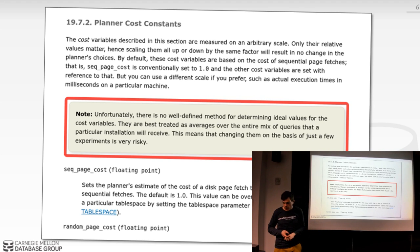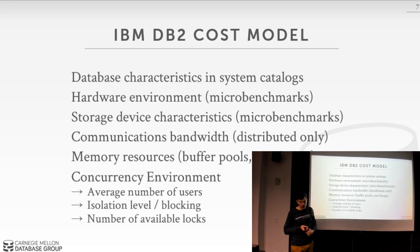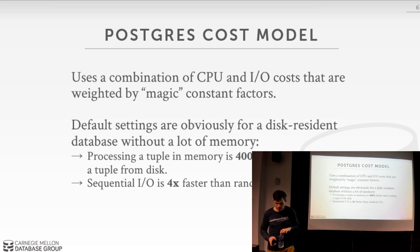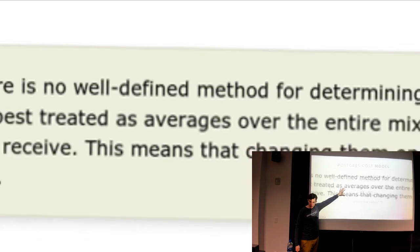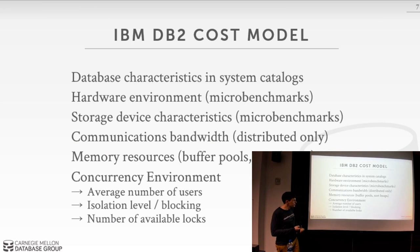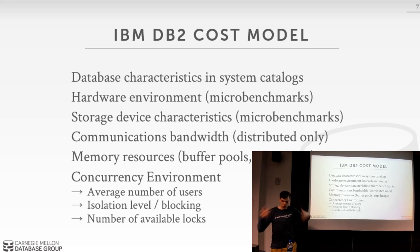MySQL is less sophisticated but does essentially the same thing at a high level. Commercial vendors like IBM DB2, Oracle, and Microsoft have much more complex cost models — they have the resources to invest in this. Postgres doesn't run micro benchmarks at boot time, but DB2 does. The question is whether systems run micro benchmarks when booting up to figure out hardware capabilities, and DB2 actually does this.